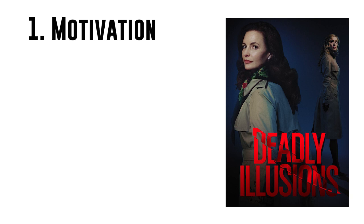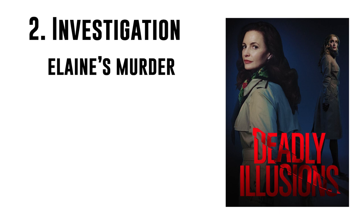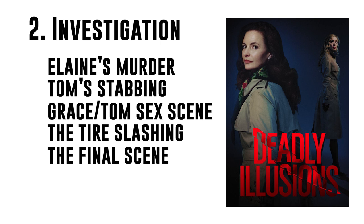I'm going to break this explanation down using two phases. Phase 1 will be Motivation, where we'll discuss Grace's Disorder, Grace's Motivations, Mary's Delusions, Mary's Motivations, Mary's Career, and Grace and Mary's Intimacy. Phase 2 will be Investigation, where we'll discuss Elaine's Murder, Tom's Stabbing, Grace and Tom's Sex Scene, the Tire Slashing, and the final scene that had everyone super confused — and much more.